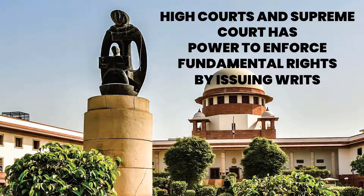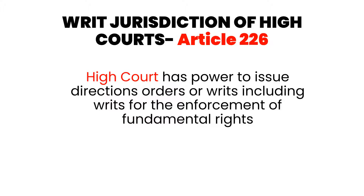The constitutional remedies are in the form of five writs, which we will see ahead. The power to issue writs in our country is given to only two types of courts — High Courts and Supreme Court. High Court has this power under Article 226, which states that the High Court has the power to issue directions, orders, or writs including writs for enforcement of fundamental rights. So under Article 226, High Court has exclusive power to issue any direction, order, or writ required for enforcement of fundamental rights.